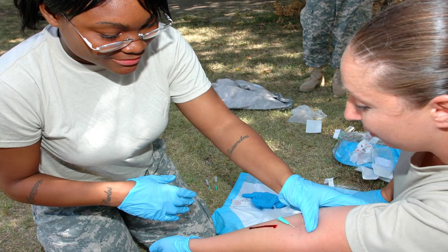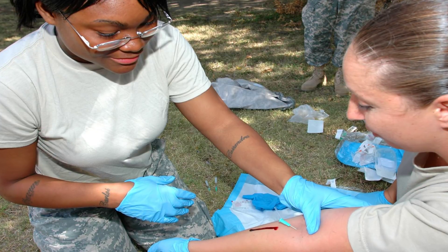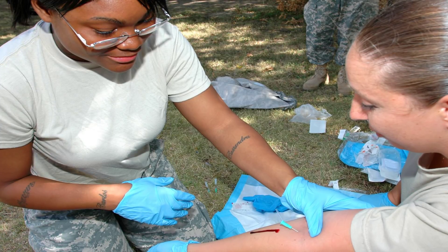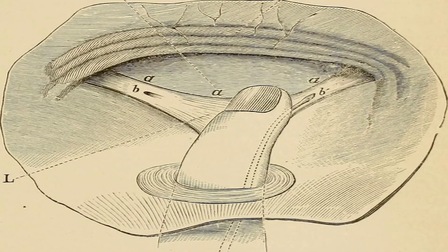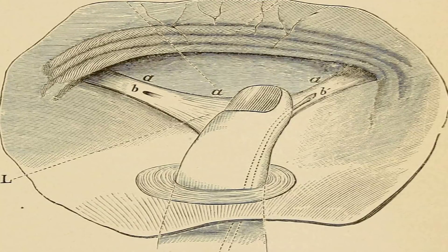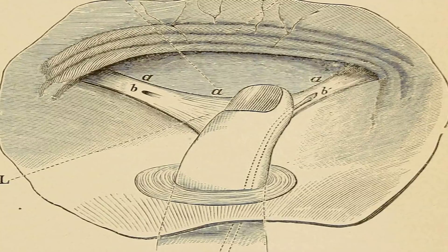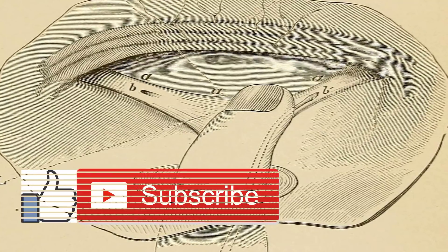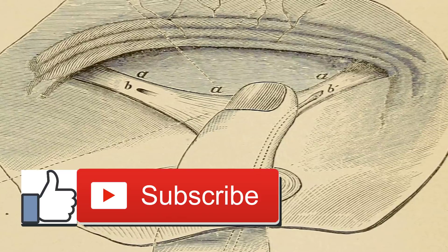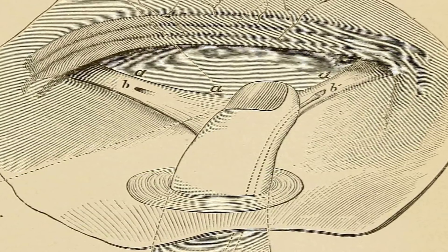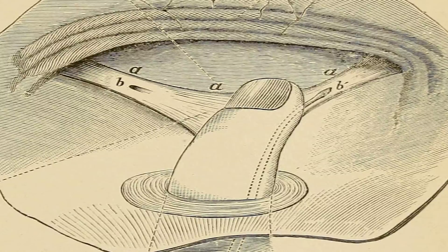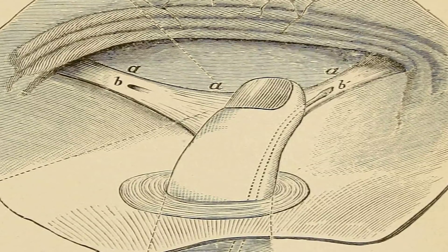Catheter ablation is a procedure that your doctor can perform to treat some kinds of heart arrhythmias, also known as irregular heartbeats or dysrhythmias. You may be a candidate for catheter ablation if medications don't control your arrhythmia. Other reasons for catheter ablation include ventricular fibrillation, which is irregular electrical activity in your heart that leads to life-threatening cardiac arrest; ventricular tachycardia, which is a life-threatening rapid heartbeat that reduces blood flow to your body; atrial fibrillation or flutter, which is a rapid flutter-like heartbeat due to extra electrical impulses; and an accessory pathway, which is a congenital condition in which additional pathways exist between the heart's atria and ventricles, causing an irregular beating pattern.